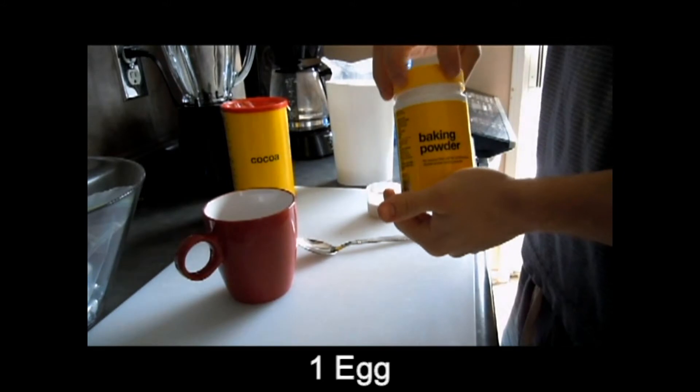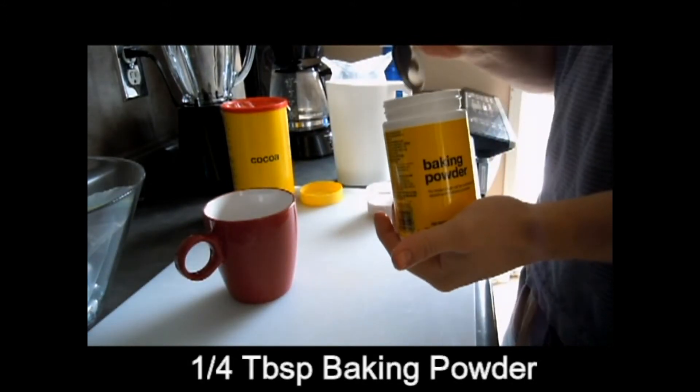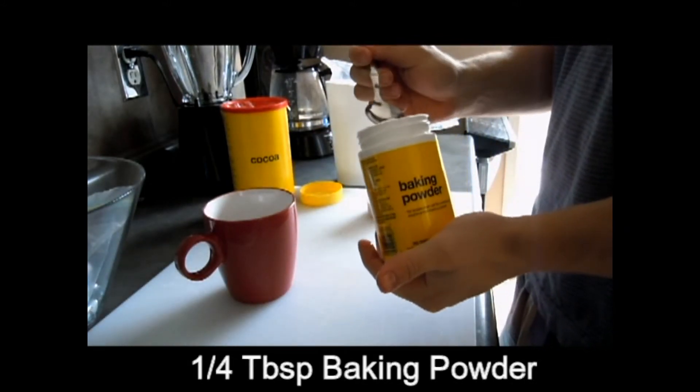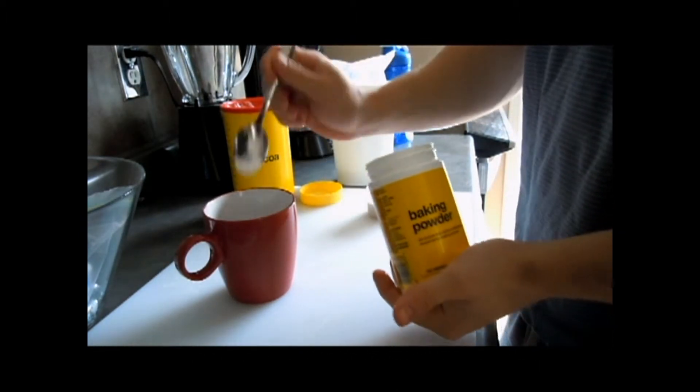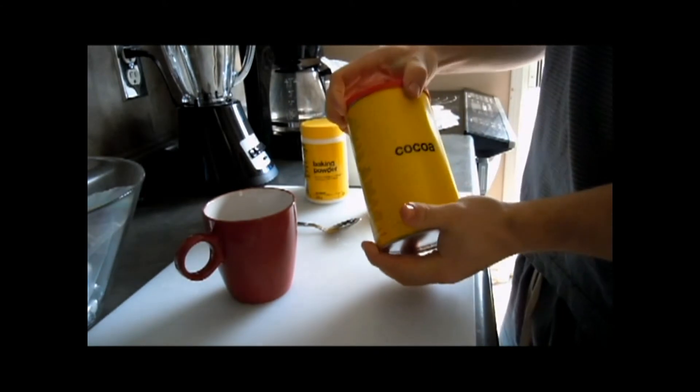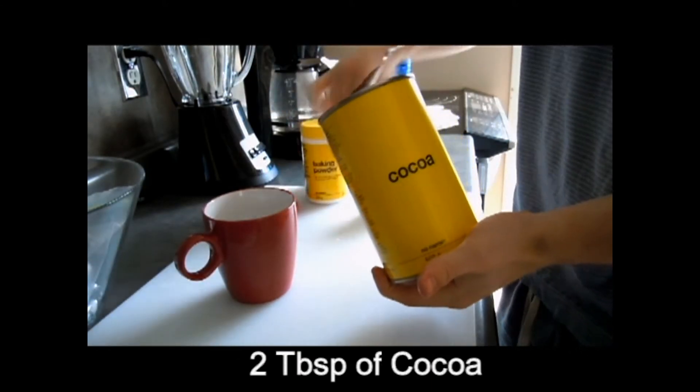Roughly one quarter tablespoon of baking powder. Roughly two tablespoons of cocoa.